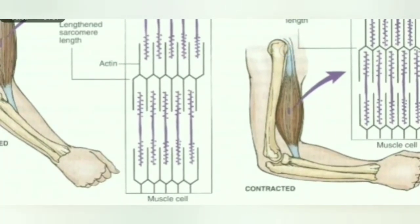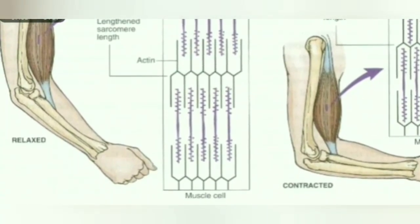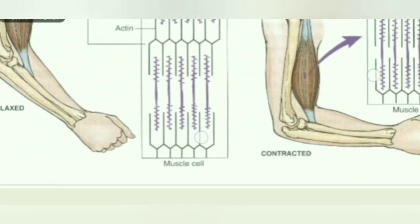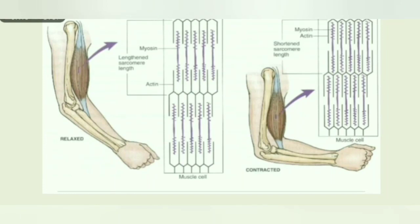Converting muscle contraction to movements requires the skeleton to which the muscles attach. Skeletal muscle contractions pull on the tendons attached to the bones. If contraction of the muscle causes the muscle to shorten, the bone and body part will move. When nervous stimulation is stopped, the muscles return to their original length after being contracted.